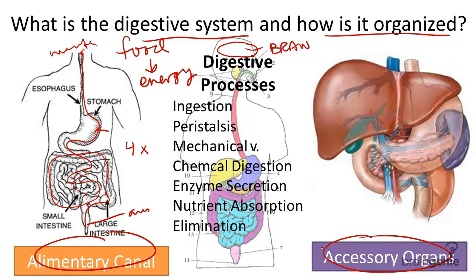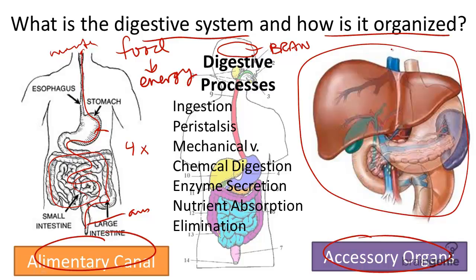Like anything in life, it's helpful to have a few friends around. The friends of the digestive system are mostly part of the endocrine system and are sometimes composed of glands. They include organs like the liver, the pancreas, the gallbladder, and salivary glands. Other organs such as the teeth and the tongue also help with digestion. Without these special organs, digestion would be hampered.